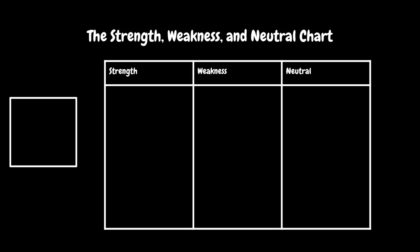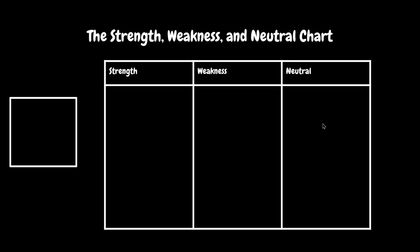This is the Strength, Weakness, and Neutral chart. The element we're going to be looking at will go here. The Strengths for the element will be here, the Weaknesses will be here, and the Neutrals will be here. Okay, let's look at the example.